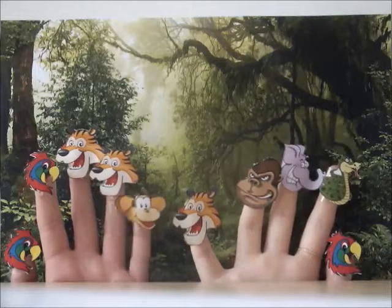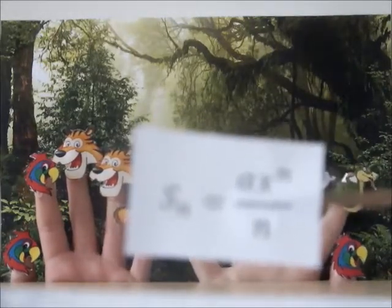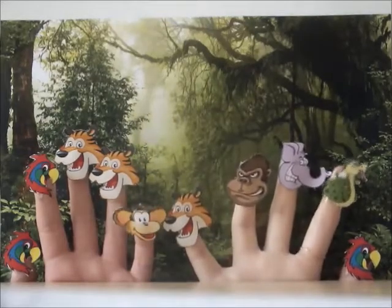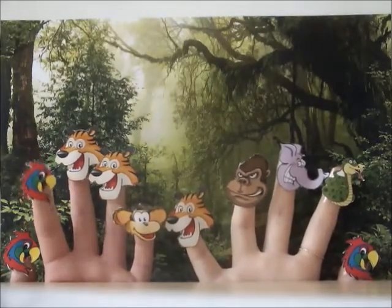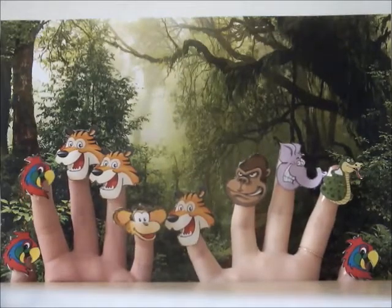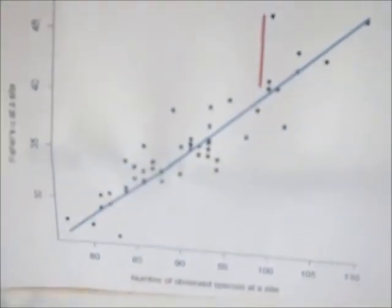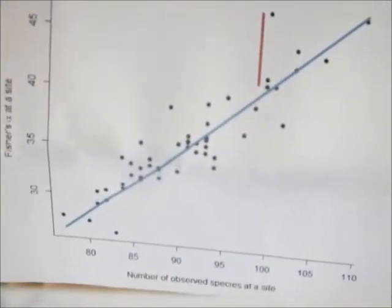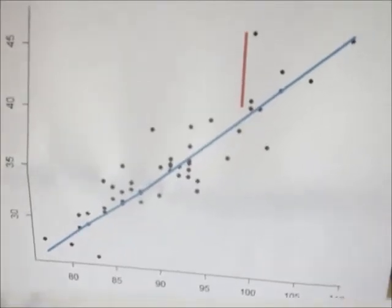Here's the equation for Fisher's alpha parametric index. Looking at the graph might help. The blue line shows that sites like ours, with a greater species richness, are generally more diverse. The red line shows that another site in the jungle might differ in diversity, despite having the same species richness.